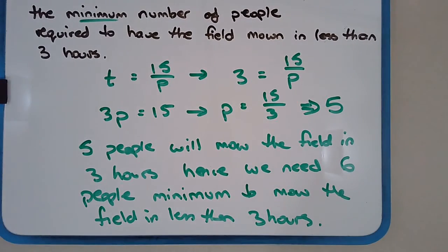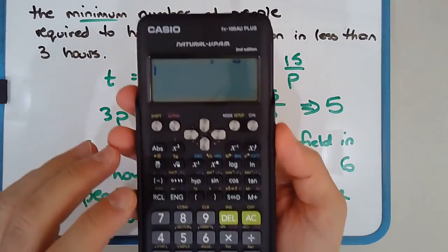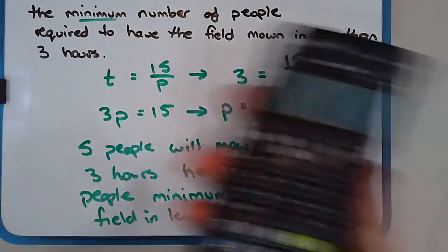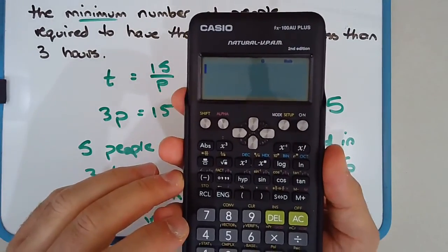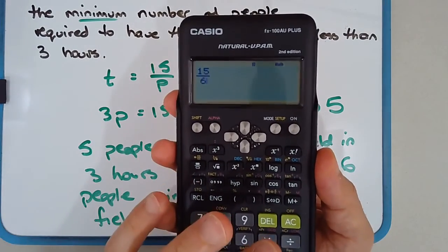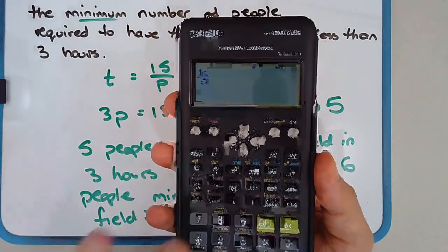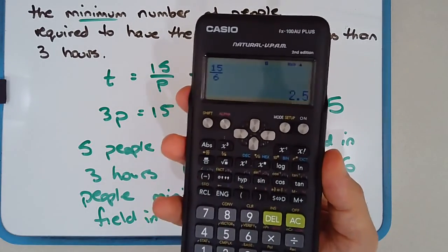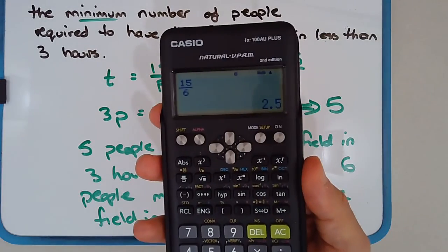And just to sort of satisfy ourselves, if we had six people, how long would it take? So let's use the formula again. So it's T equals 15 over P. So 15 over the number of people. So we have six people, kind of a 5.5 people, six people, five on two, two and a half hours. So six people will mow the field in two and a half hours.